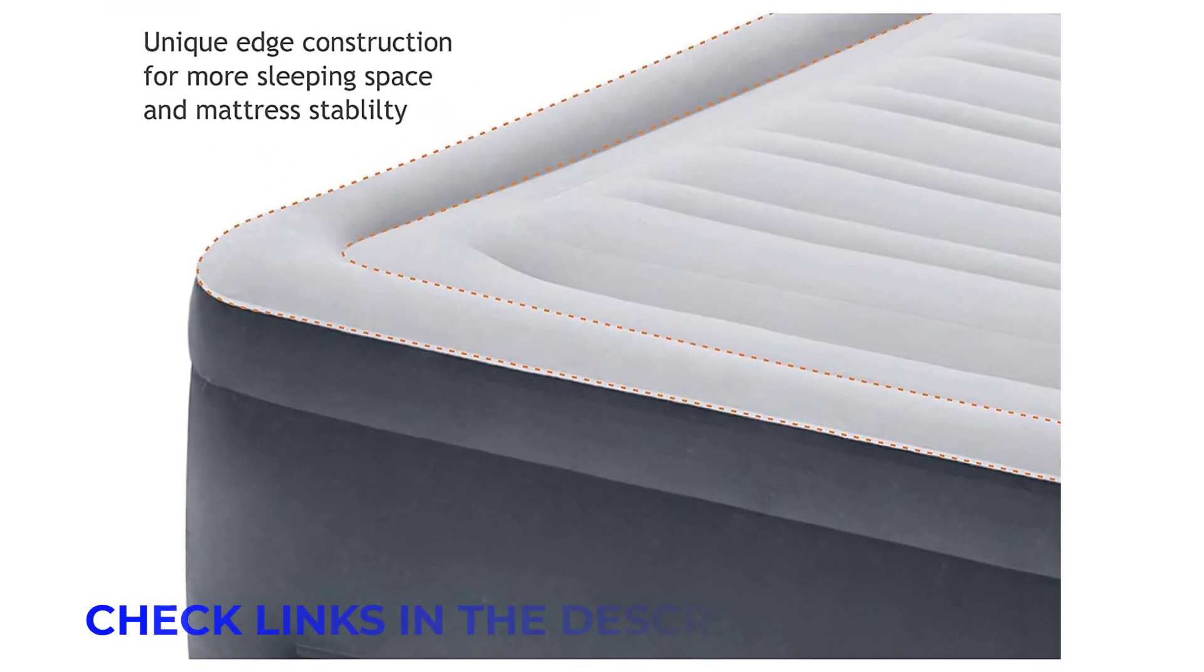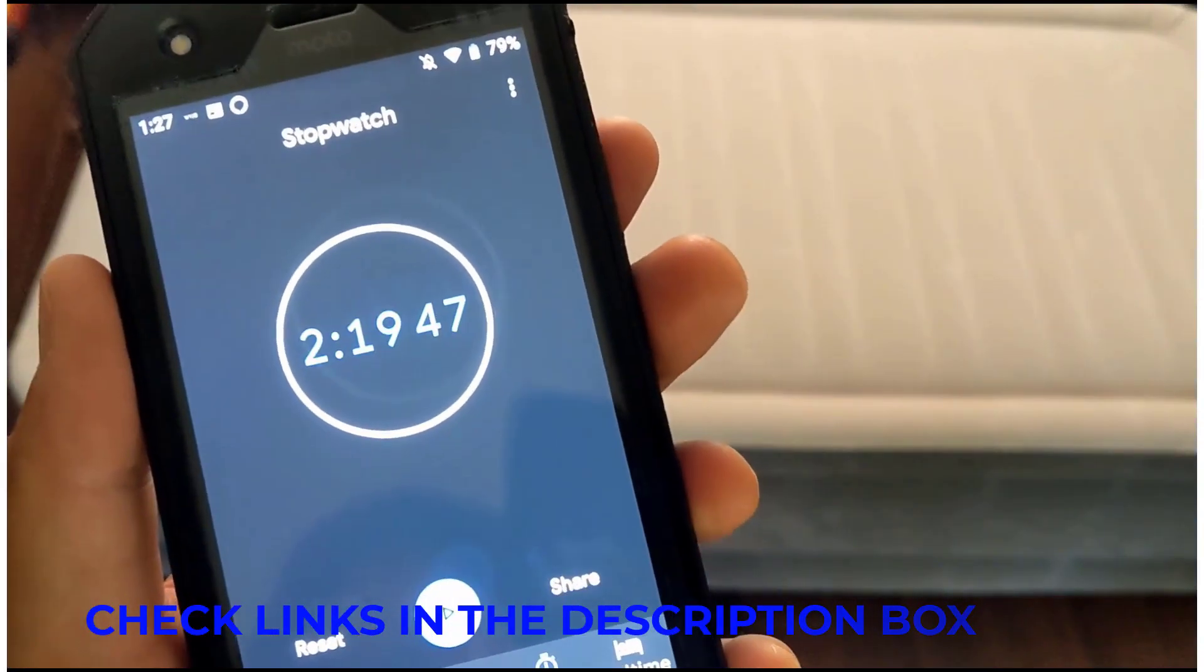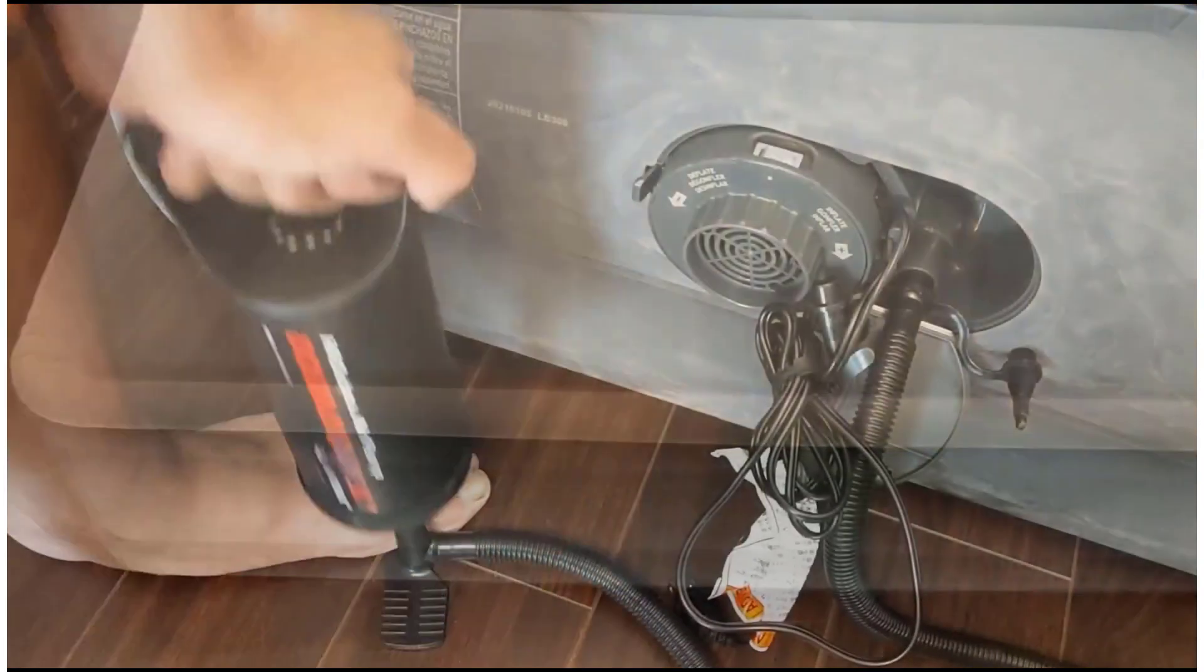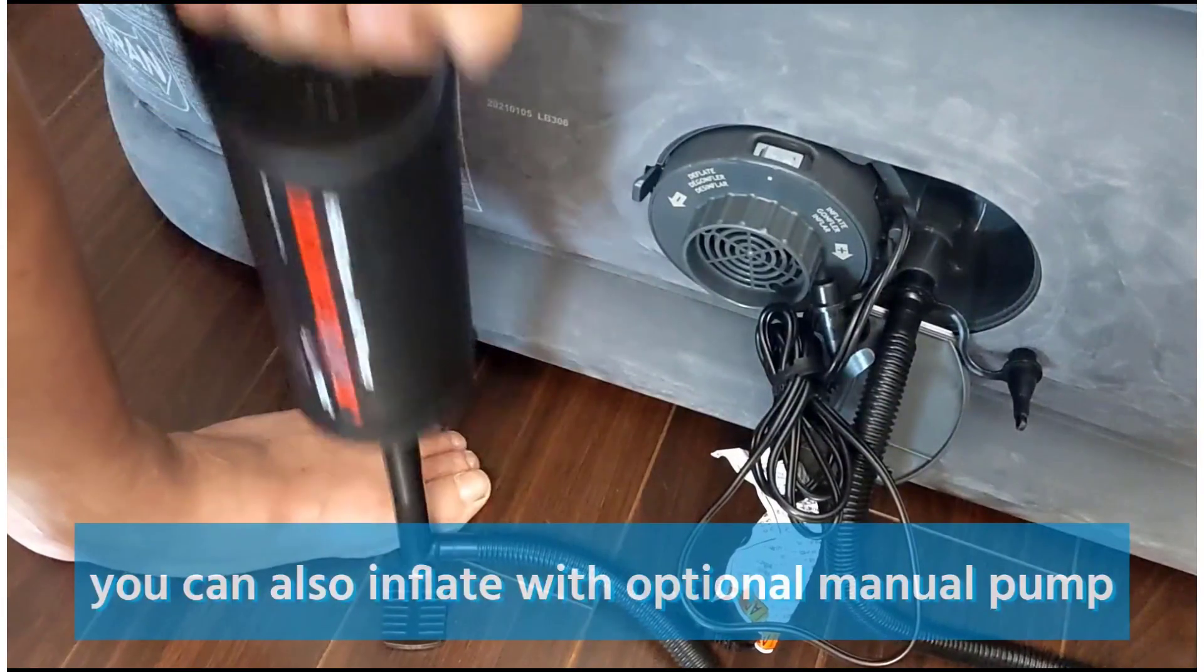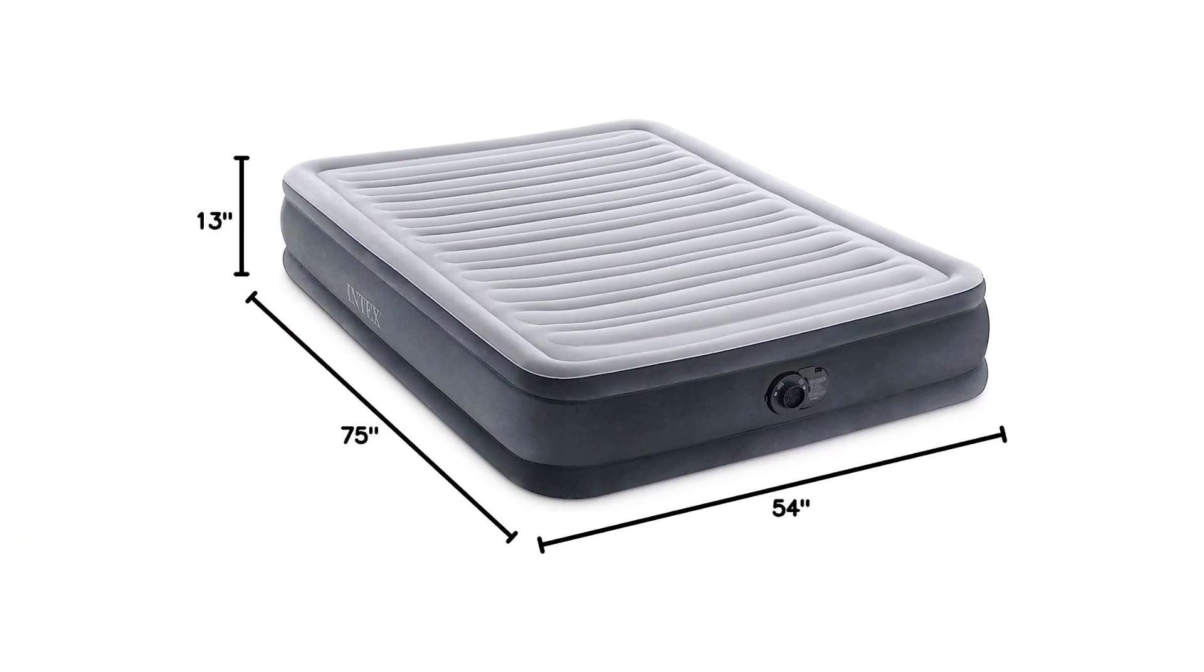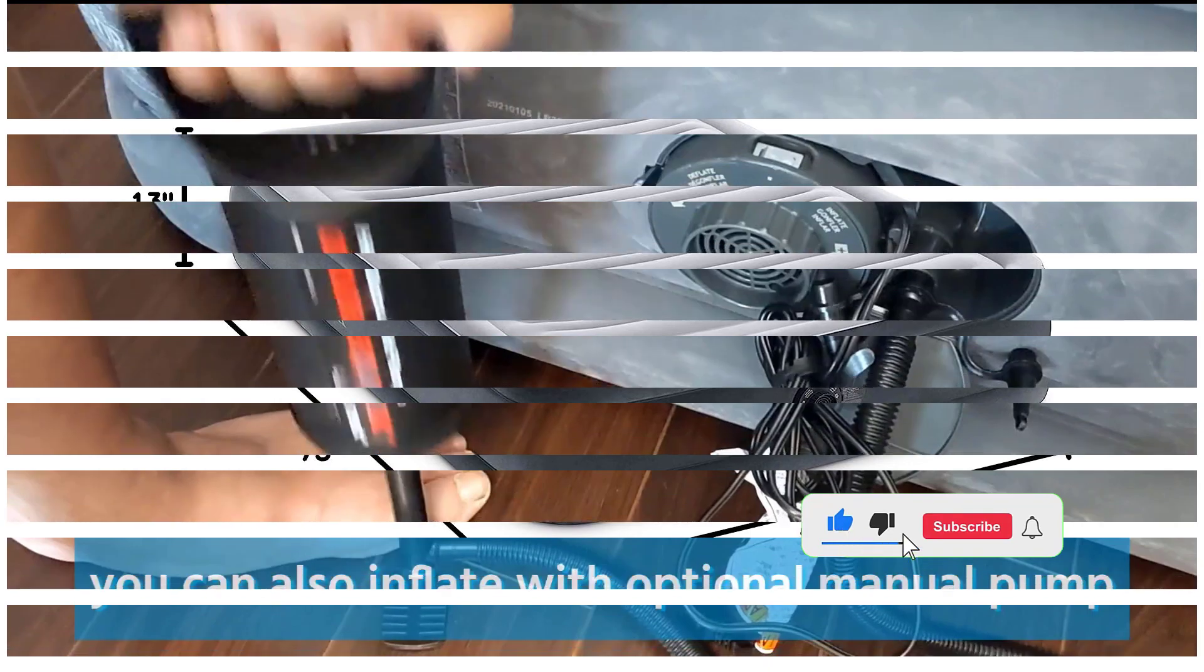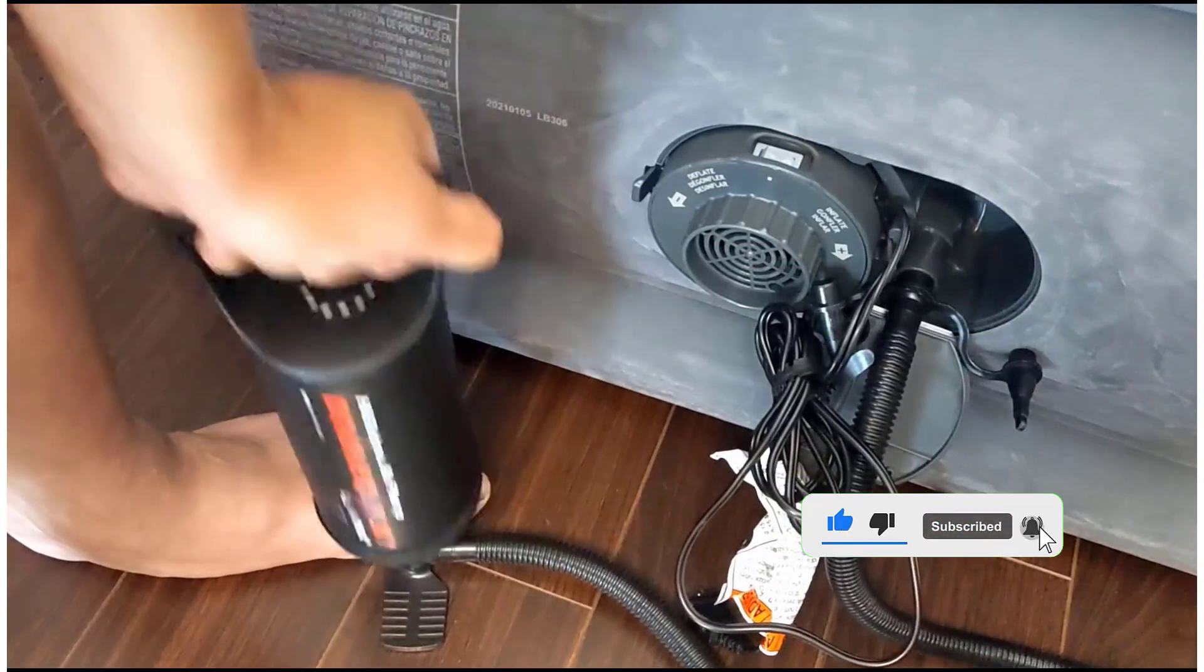Similar to the Enerplex, the Intex has an internal pump and a soft flocked top that feels nice and keeps your sheets in place. However, the construction is slightly different, with a pillow top that contains horizontal air channels to create a tufted feel. And instead of vertical air-filled coil beams for added support, the inside of this mattress contains rows of polyester fibers that stand up when the bed is inflated.